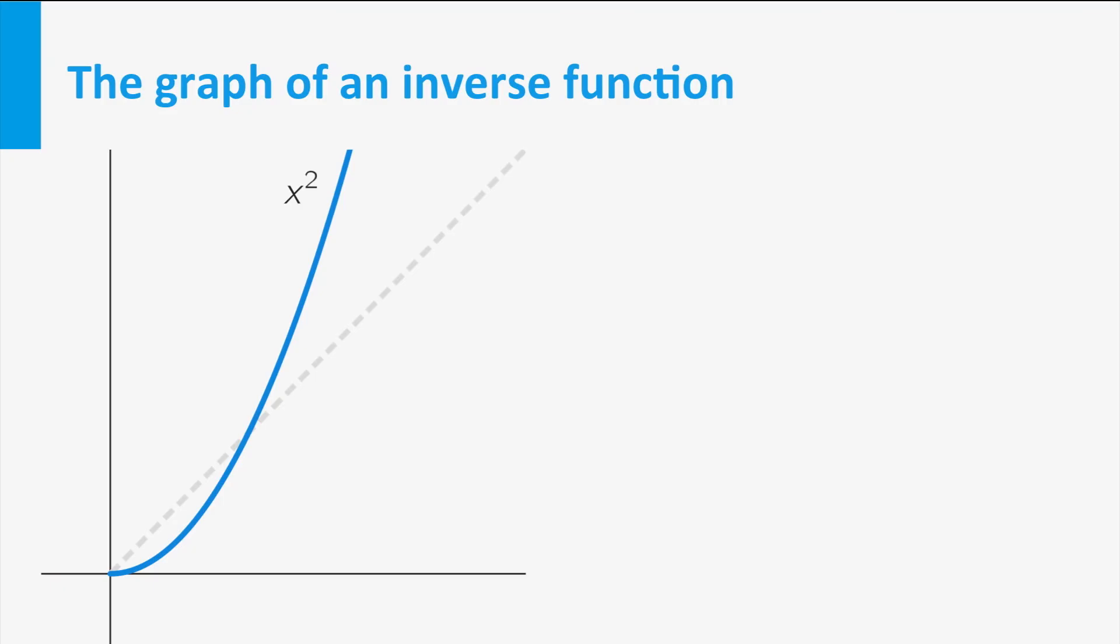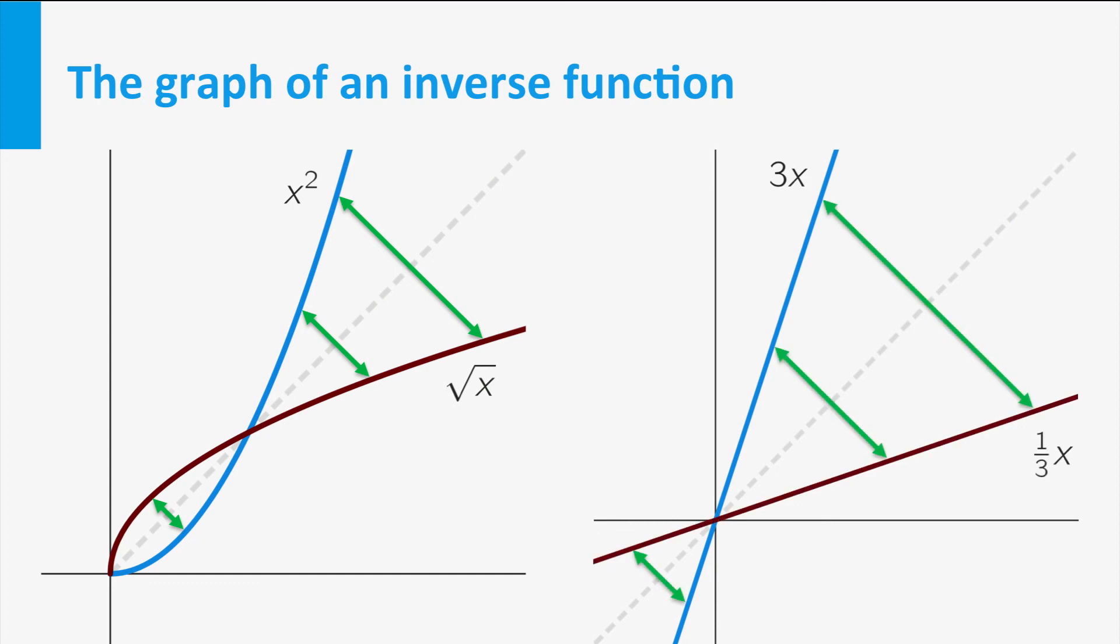You just saw that the square root of X is the inverse of the function X squared restricted to the positive numbers. So we obtain the graph of the square root of X by reflecting the graph of X squared in the line Y equals X. And in the same way, you can obtain the graph of 1 over 3 times X from the graph of 3 times X.